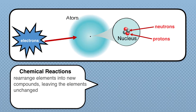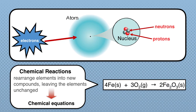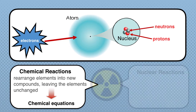In a chemical reaction, we're going to rearrange the elements to make a new compound, but the elements are going to remain unchanged. If we're looking at a chemical equation, here's an example: iron reacts with oxygen to form iron 3 oxide. This is the equation that produces rust.